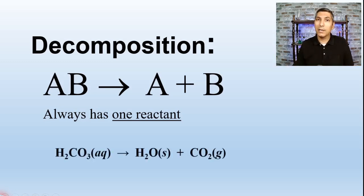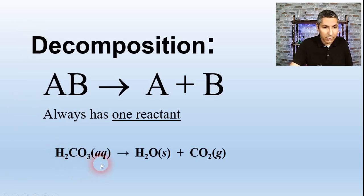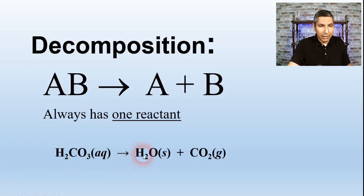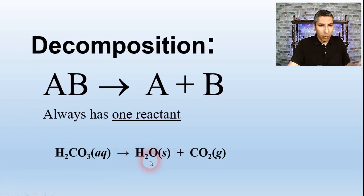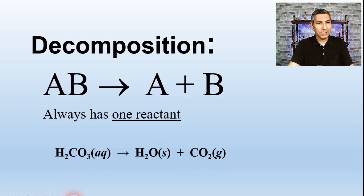Here's a good example of a decomposition process. We start out with H2CO3, carbonic acid in its aqueous form, and it decomposes. Notice how it breaks down into two substances: water, which should be liquid, and carbon dioxide, which is going to be a gas. So here we have a good example of a decomposition process.